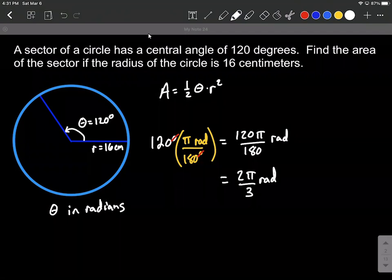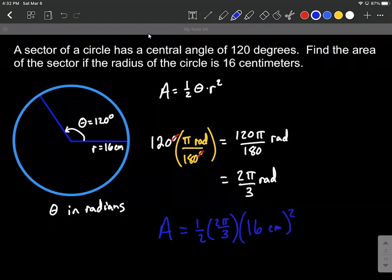Now let's get to plugging in. So for our area, our area can be computed by saying one-half times our radian value for theta, which is 2 pi over 3, and then multiplied by our radius, which is 16 centimeters squared.